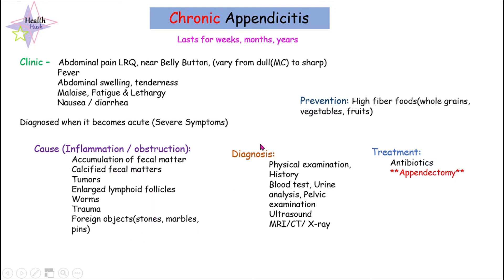For diagnosis, it is the same as for acute appendicitis: physical examination, taking history, blood tests, urine analysis, pelvic examination, ultrasound, MRI, CT, and X-ray. For more detail on diagnosis, I will mention a link in the description box for acute appendicitis covering diagnostics and signs and symptoms.